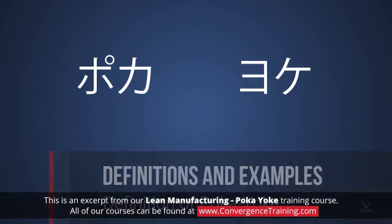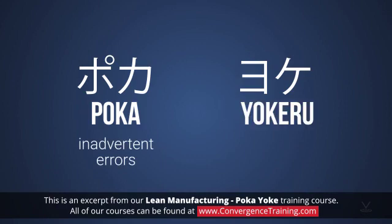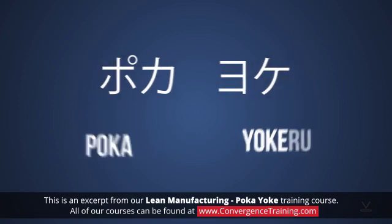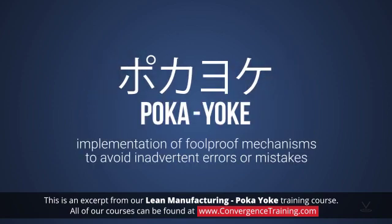Poka-yoke comes from the Japanese terms poca, meaning inadvertent errors, and the term yokeru, meaning to avoid. Therefore, the two terms together can be defined as the implementation of foolproof mechanisms to avoid inadvertent errors or mistakes.